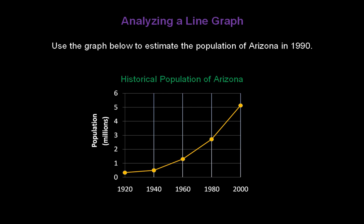At the top of every graph you should find a title, in this case the historical population of Arizona. On the left-hand side you should find a label for the vertical axis. It's the population in millions and it goes from zero all the way to six million at the top of the graph.